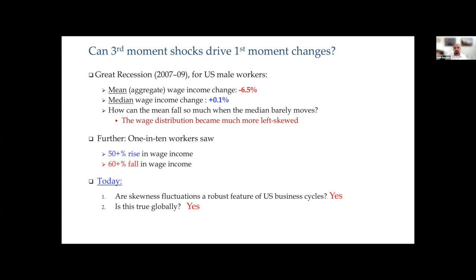The second question is whether this is true globally — do we see this in other countries? I'll show evidence on firms from a panel of 44 countries and on workers from the Global Income Dynamics Project covering 13 countries, and you see the same pattern with almost no exception. The third question is: does it matter for macro policy? The answer will be yes — skewness shocks put into a calibrated macro business cycle model produce first-order effects on GDP, employment, consumption, and investment.